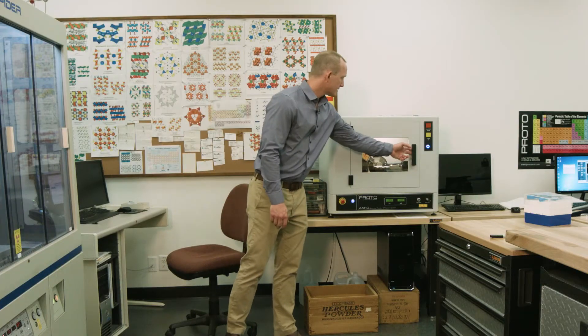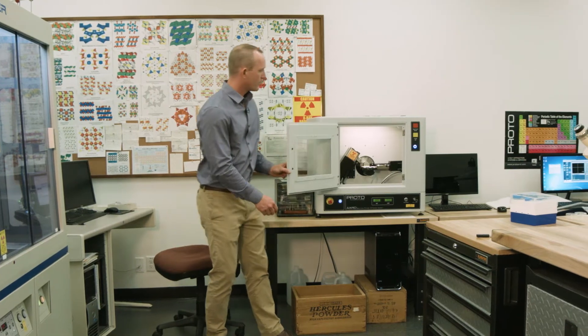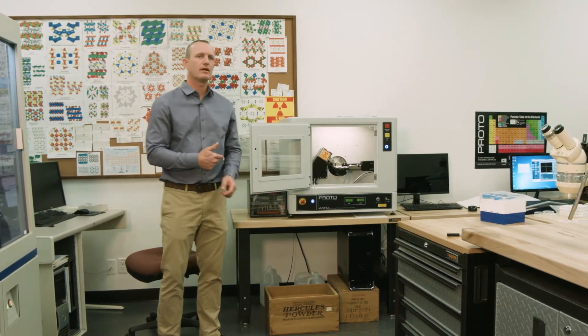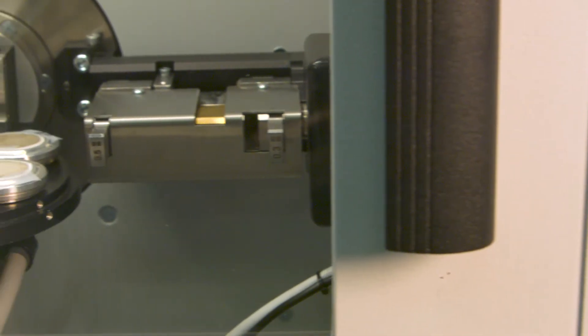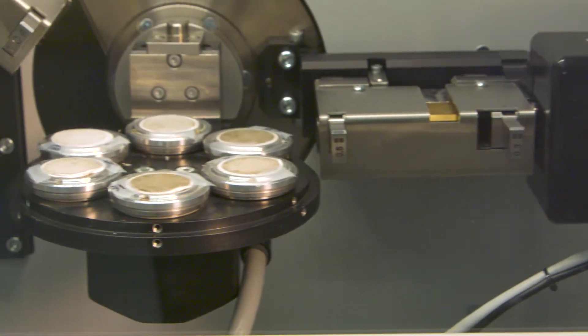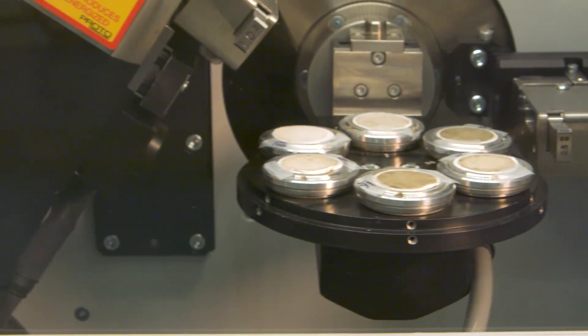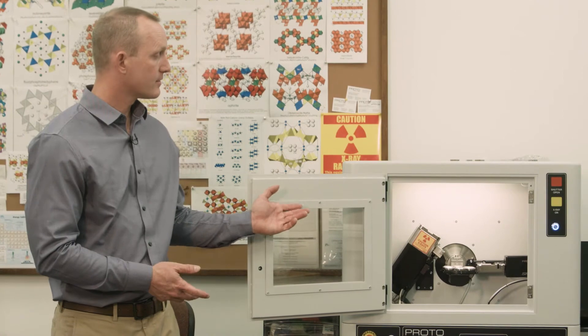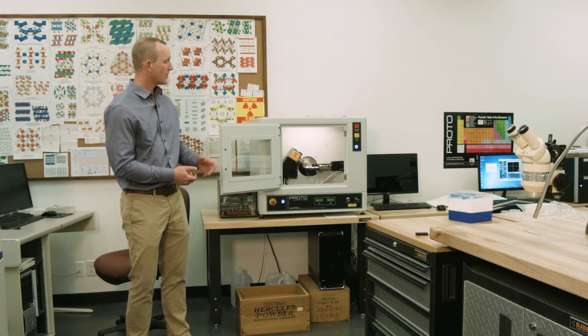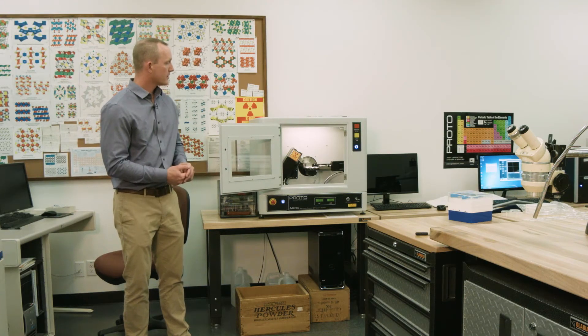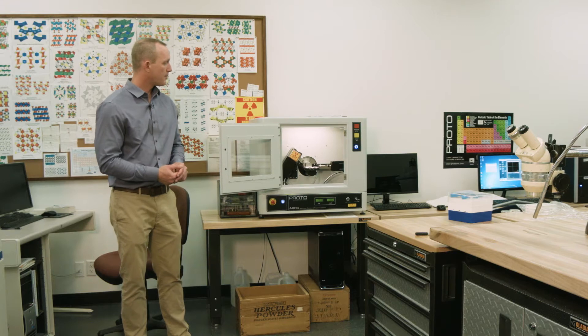The instrument on the left is one type of diffractometer where we can load many samples and have data automatically collected over time. When we come back we have a lot of data to analyze quickly. We do lots of different things with this instrument - for example, the materials loaded now are from alpine glaciers in the Peruvian Andes. We're looking at how minerals contribute to rapid glacial retreat, doing environmental mineralogy.